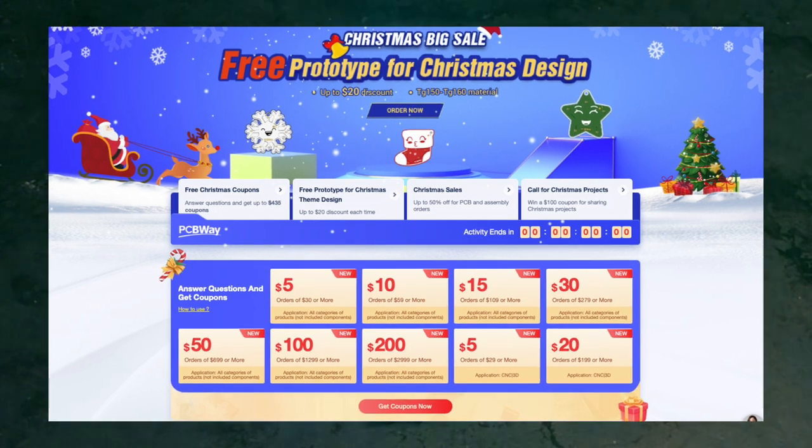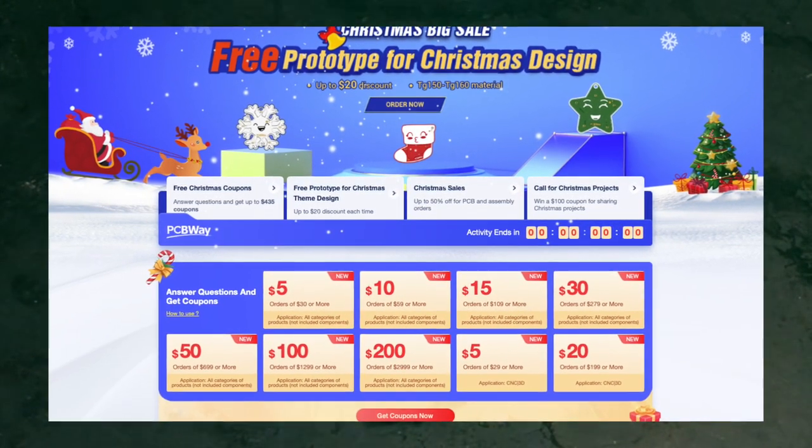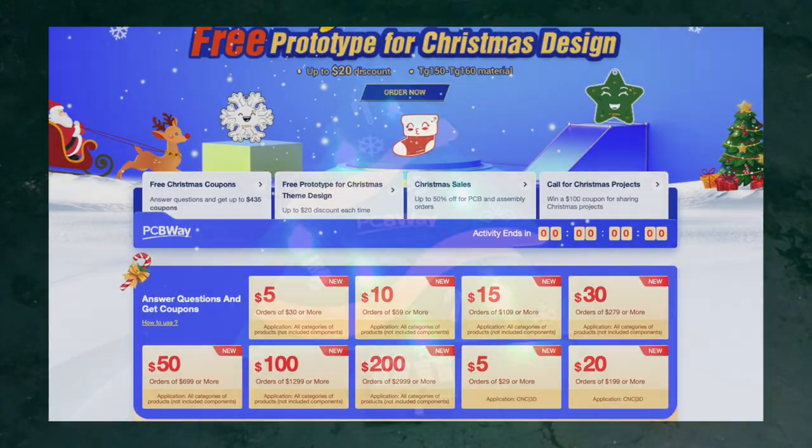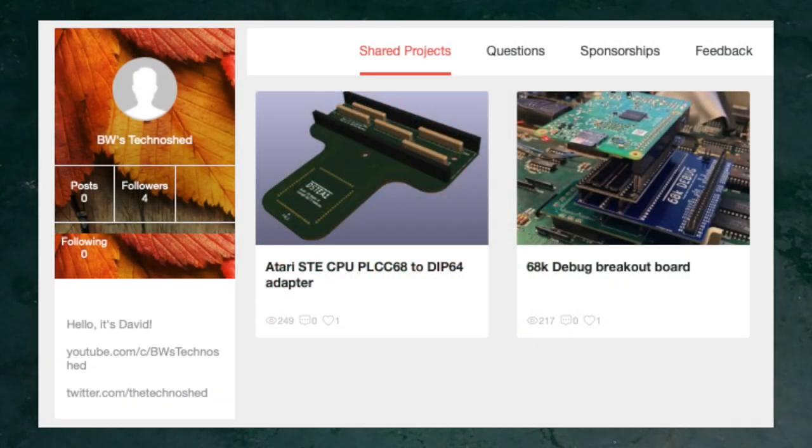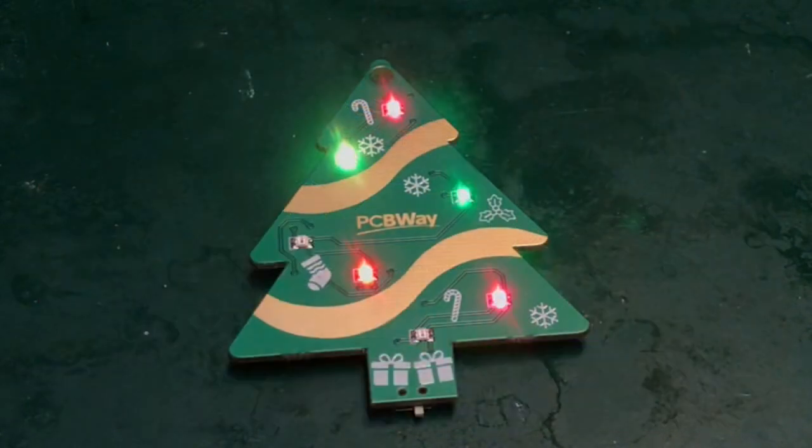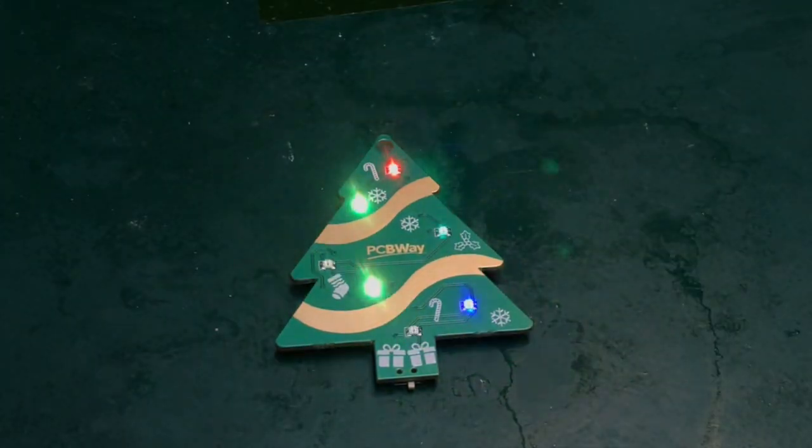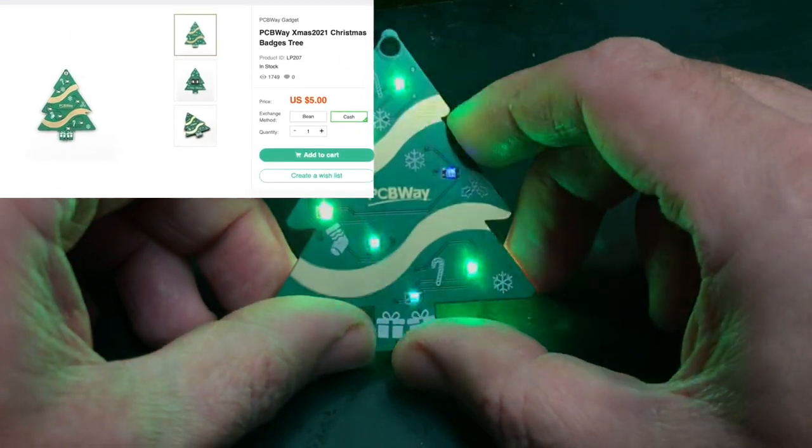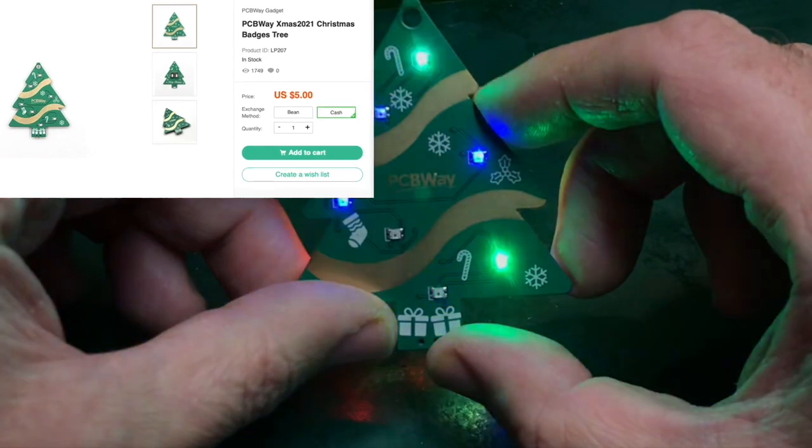Keep your eyes open for discounts and other offers too. At the time of recording, there are a variety of Christmas-themed offers and a number of prototyping and assembly discounts available on the website. There is also a substantial community-contributed project section as well as off-the-shelf modules available for purchase. This very Christmas tree decoration is actually one such example, and it's linked in down below.